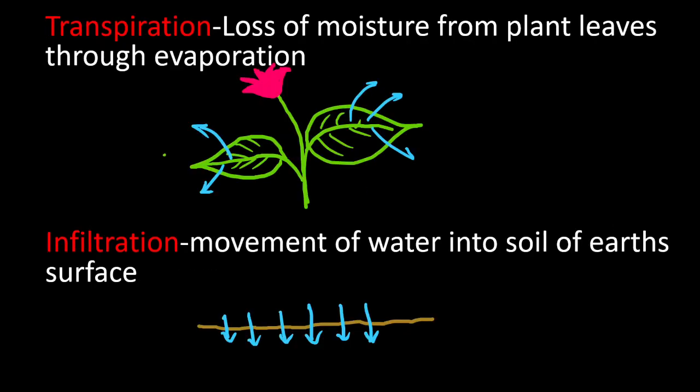The next component is transpiration. All leaves have small pores called stomata. There is a loss of moisture occurring due to temperature difference — evaporation practically happens through the stomata from plant leaves, and that is called transpiration. If evaporation from plants together with the adjacent soil is considered, it is called evapotranspiration.